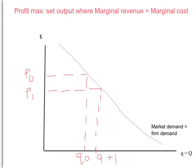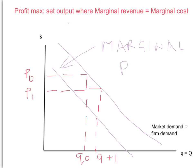So now we can put our marginal revenue curve on here. We know that at a quantity of Q0, the marginal revenue curve is going to be less than the price — it's price minus that quantity times the price change. Similarly at quantity Q0 plus 1, the marginal revenue will be less than the price. So the marginal revenue curve sits somewhere underneath the demand curve. I'll deliberately take it over the horizontal axis — there's no reason why marginal revenue must always be positive; it may become negative at some quantities. So we can now label this our marginal revenue curve.